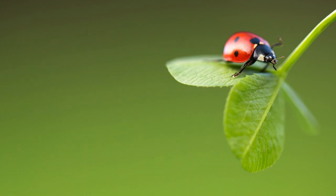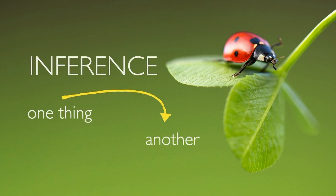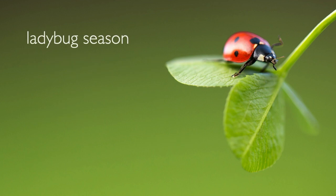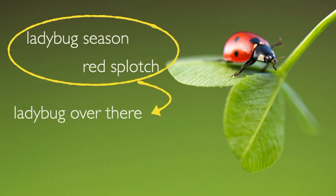First, we need to lay down some groundwork. An inference is reasoning from one thing to another. Maybe I know it's ladybug season, and I see a red splotch on a leaf. From those two things, I might infer a new thing: that there's a ladybug over there. I could be right, and I could be wrong, but it's not a blind belief — it's got some reasoning behind it.